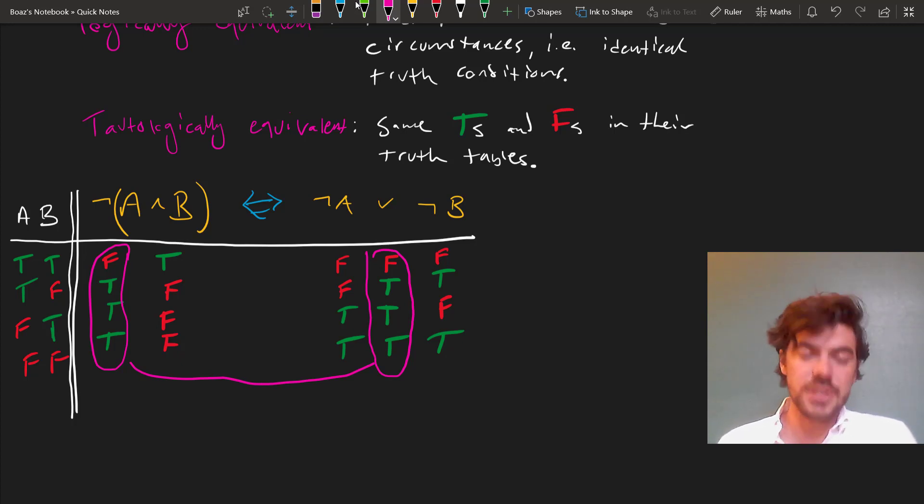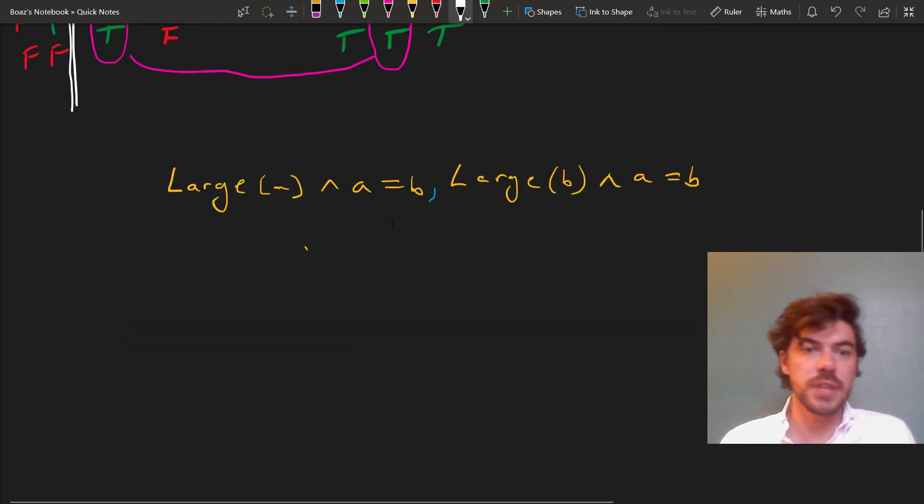But there are logical equivalences that are not tautologically equivalent, and we can give an example of one of these, which we can't show is a logical equivalence using a truth table. So here are two sentences, A is large and A equals B, and B is large and A equals B.